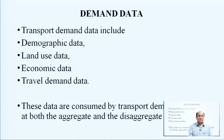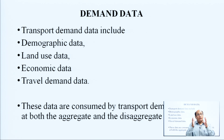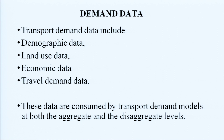The main data needed for urban transport planning include: first, demographic data; second, land use data; third, economic data; and fourth, travel demand data. These are the basic data required and are consumed by transport demand models, which include trip generation, trip distribution, modal split, and trip assignment, at both aggregate and disaggregate levels.